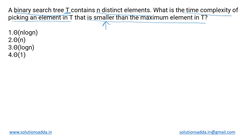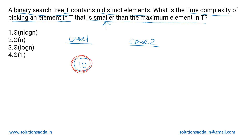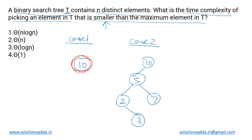Case one: when there is just the root and it has no children. In this case, the root itself is the maximum element. Case two: the root has a left subtree but no right subtree. Here again, the root itself is the maximum element.